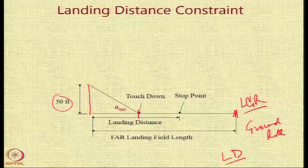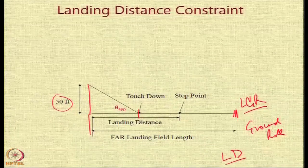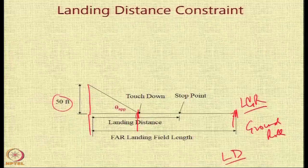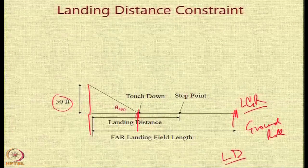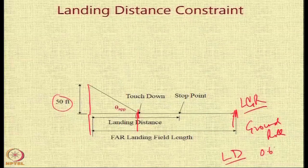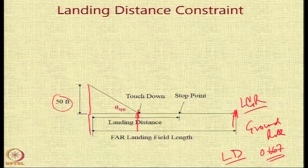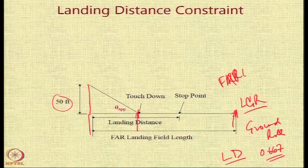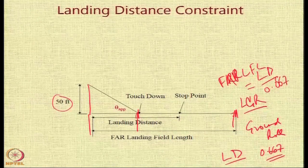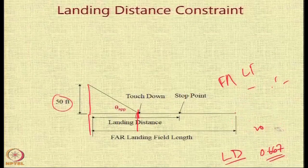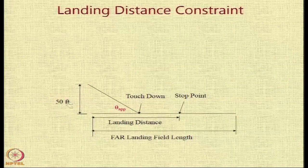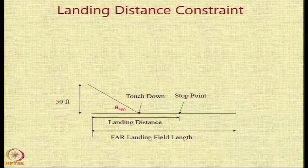Landing distance equals the approach distance plus the landing roll. The FAR landing field length includes a safety factor of 0.667 as a dividing factor — so FAR landing field length equals the landing distance divided by 0.667. This margin takes care of pilot technique, weather conditions, and runway conditions.